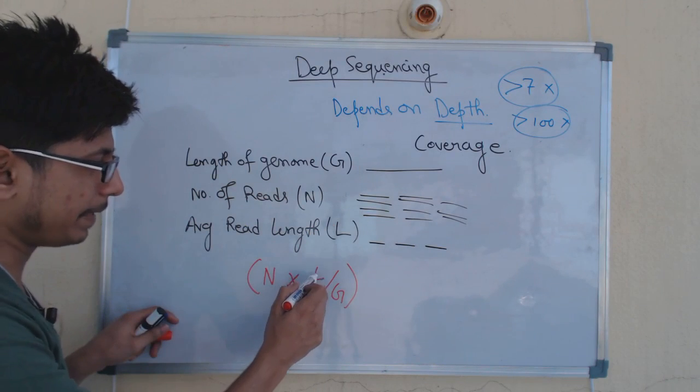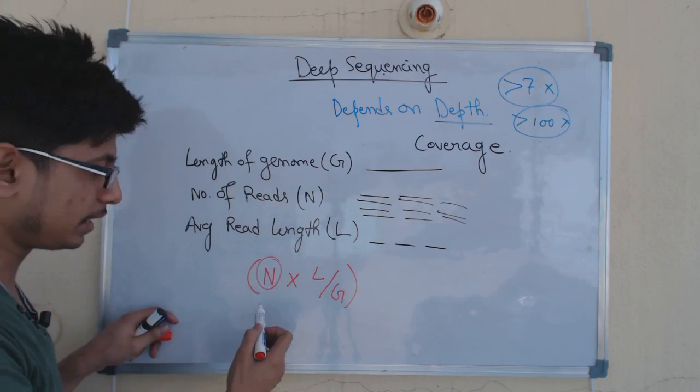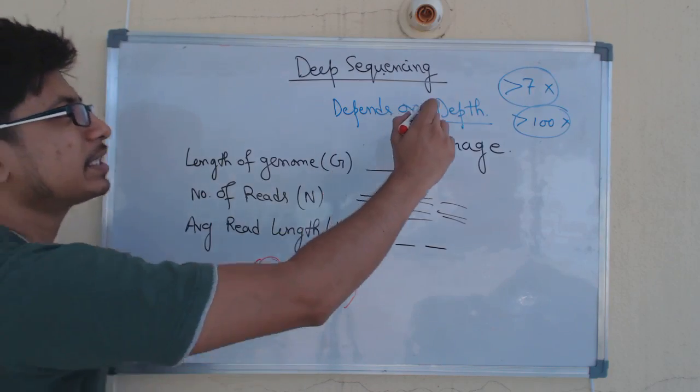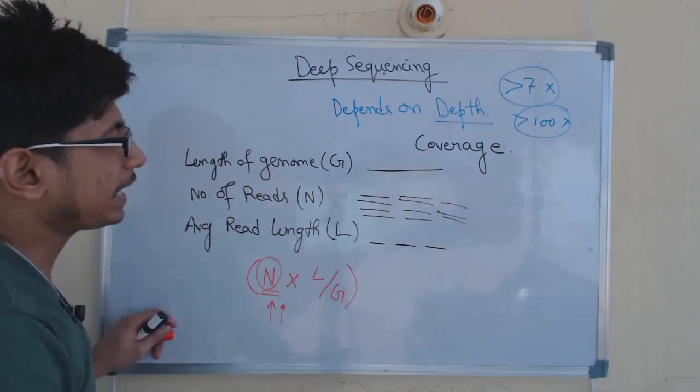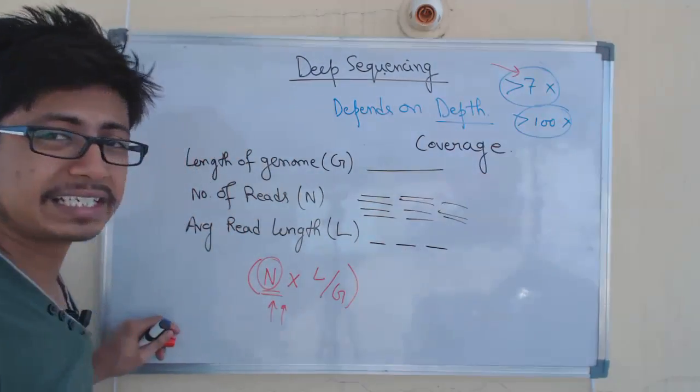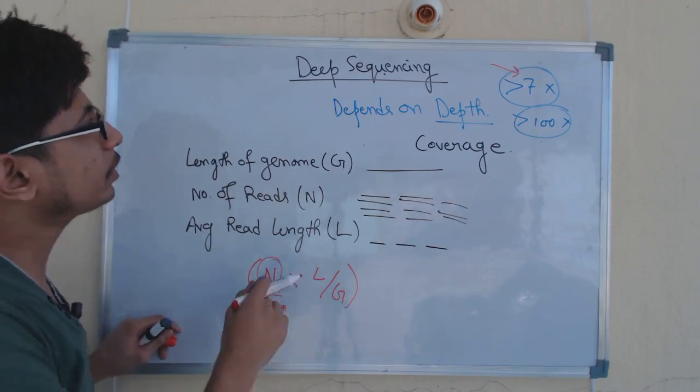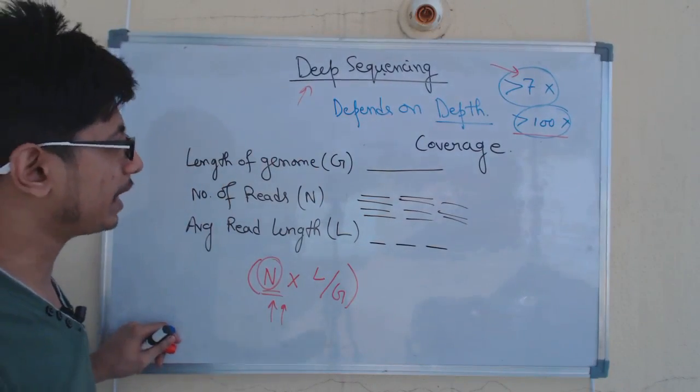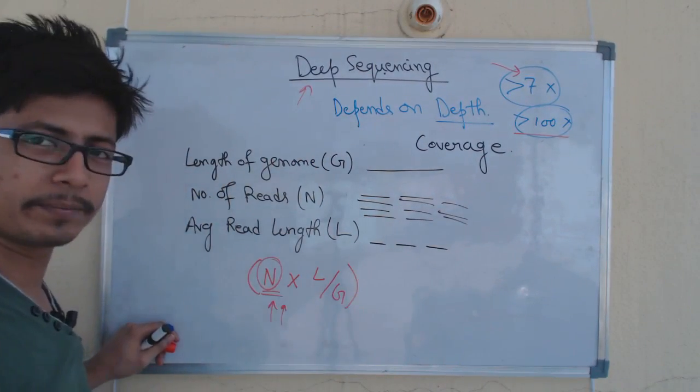N multiplied by L divided by G. The number of reads matters a lot. If we increase this number, the sequencing coverage will also increase. If it gets more than 7x or seven times, you call it deep sequencing. If it gets more than a hundred times, it will be known as ultra-deep sequencing.